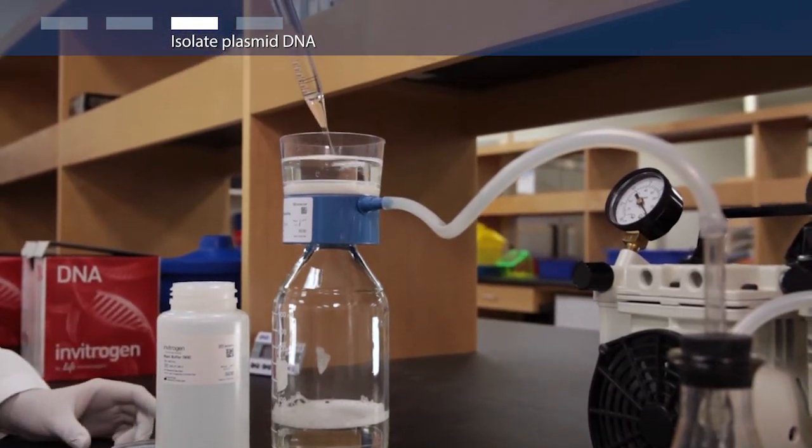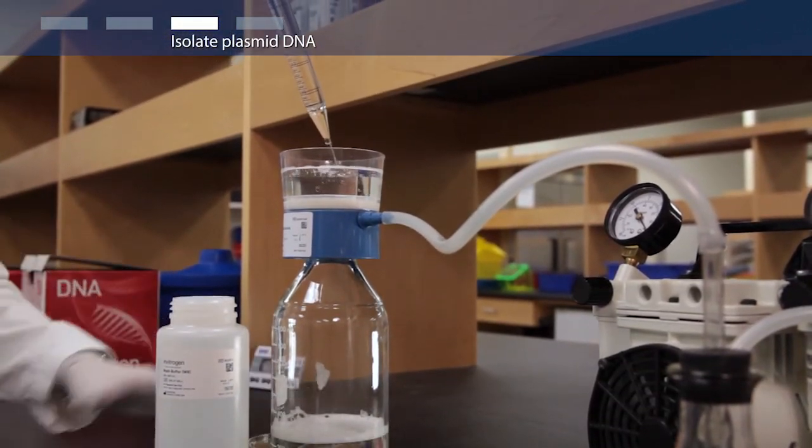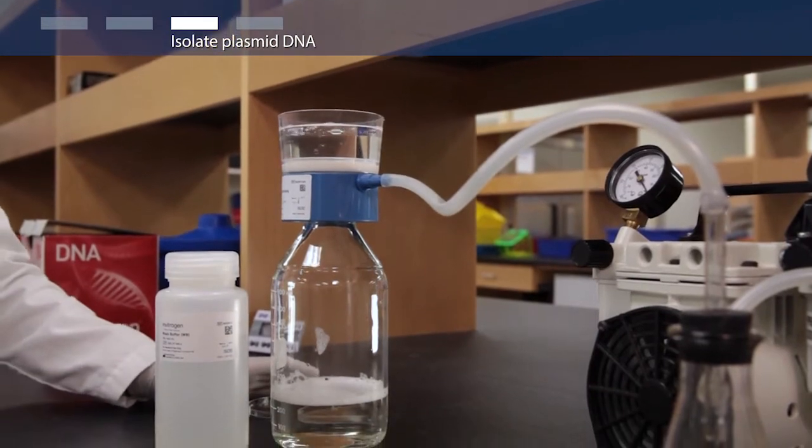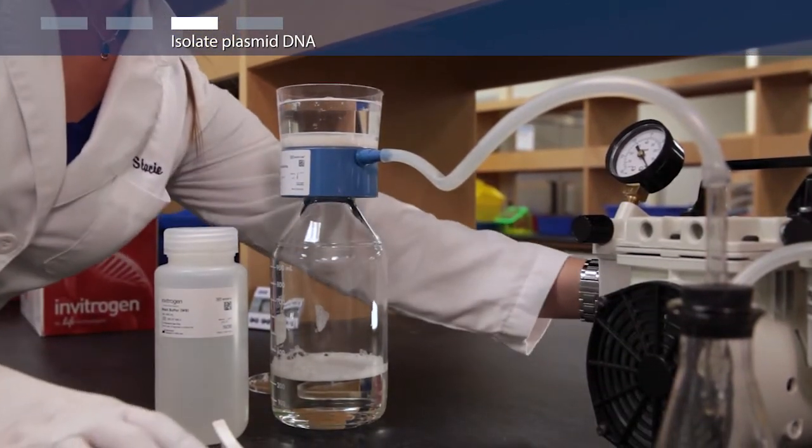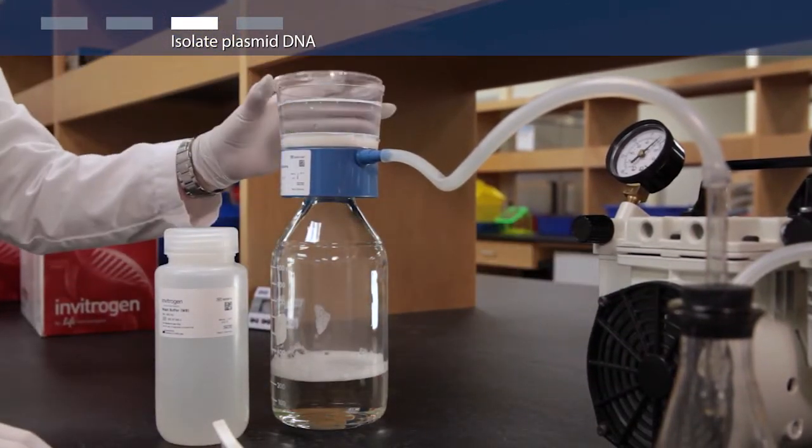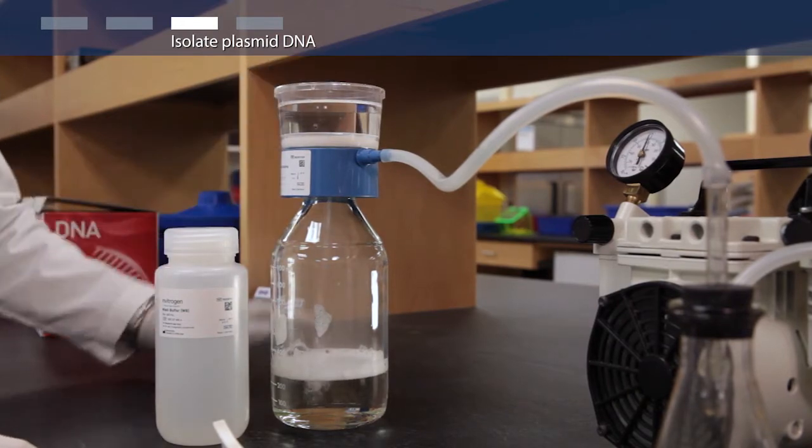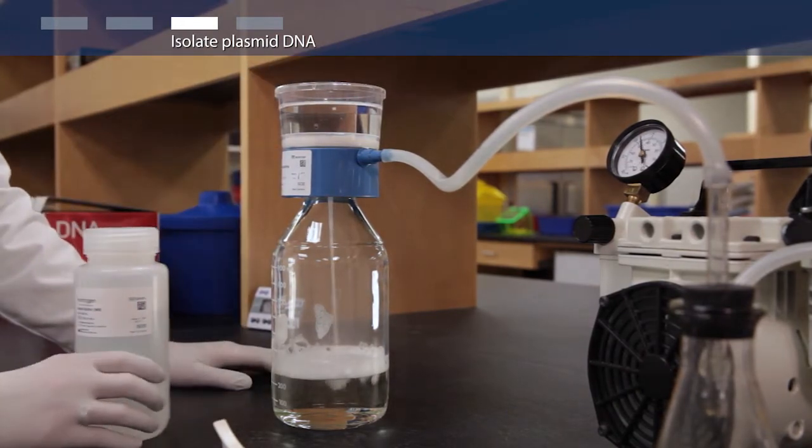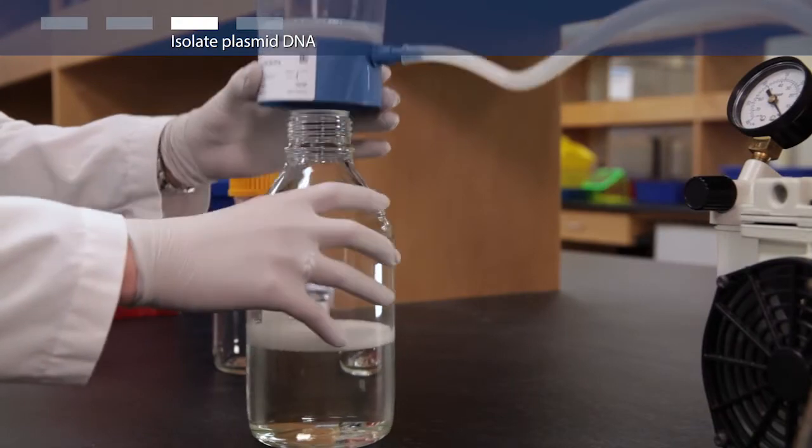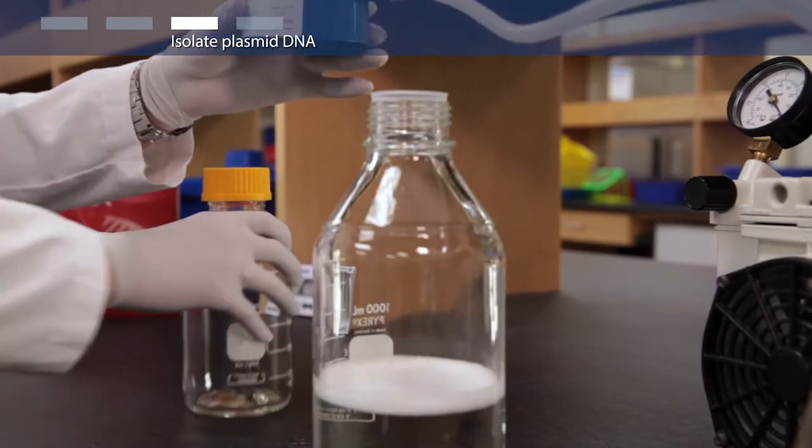Finally, add 175 milliliters of wash buffer and apply vacuum. Repeat, then attach the DNA binding cartridge to a new receiver flask.